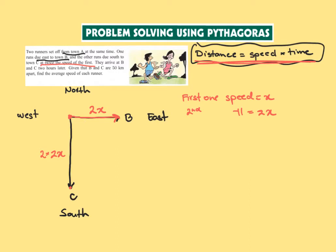Now given that B and C are 50 kilometers apart, we have to find the average speed of each runner. First we're going to use Pythagoras to find what is x, and then after that you're going to find the other sides and then the average speed.